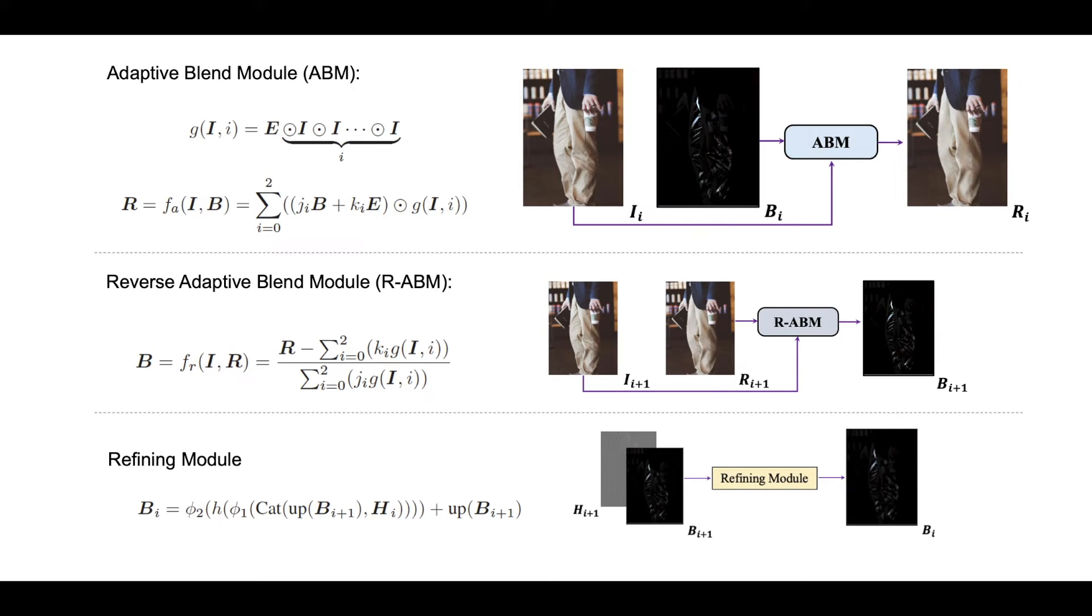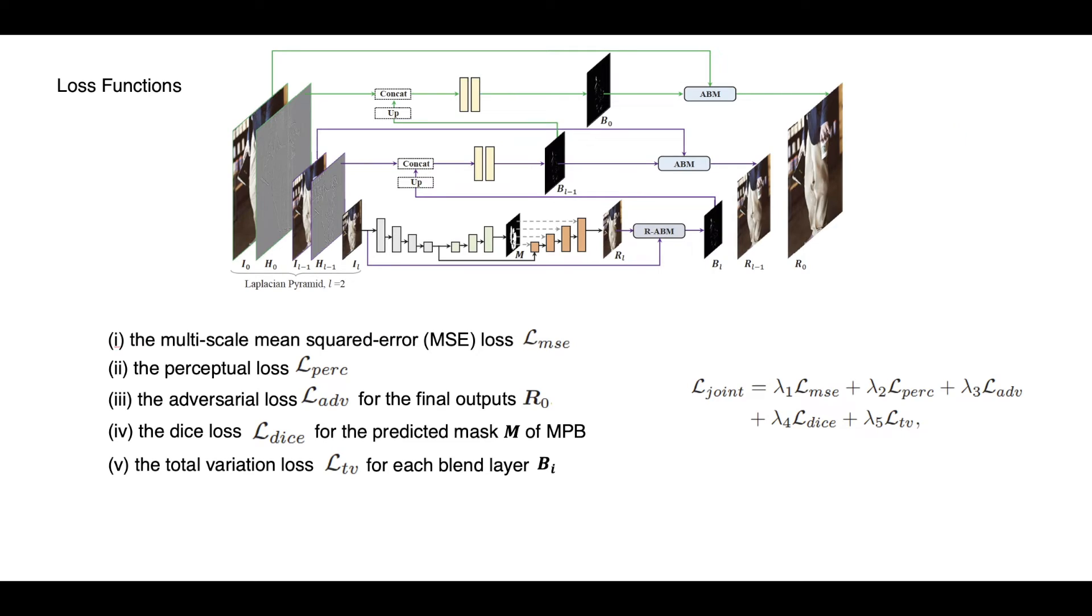The model is trained in an end-to-end manner, and the loss functions that we utilize for training consist of the multi-scale mean squared error loss, the perceptual loss, the adversarial loss for the final outputs R0, the dice loss for the predicted mask M of MPB, and the total variation loss for each blend layer.